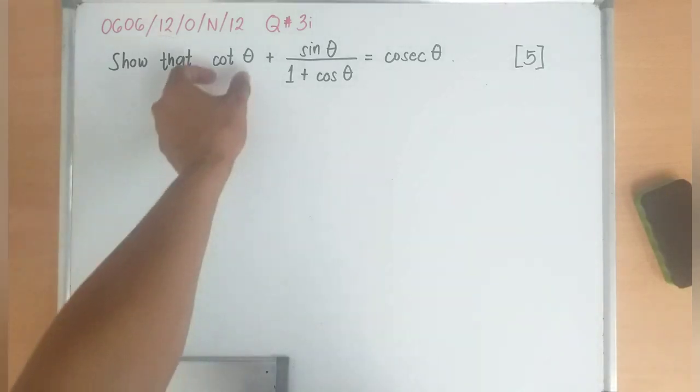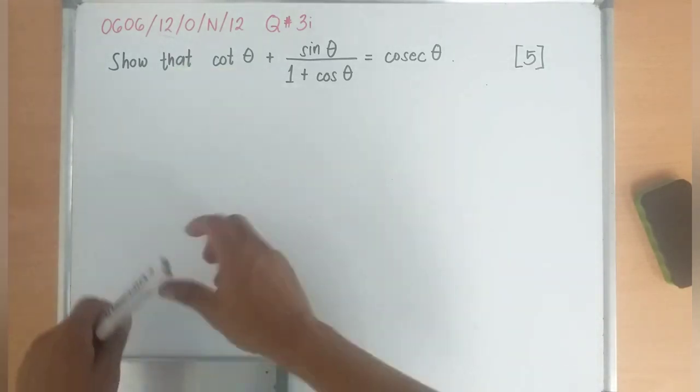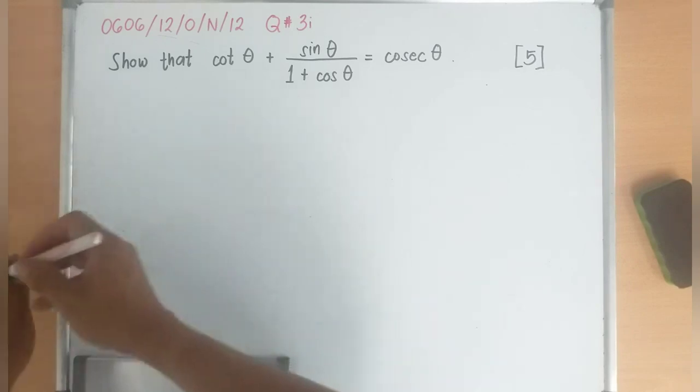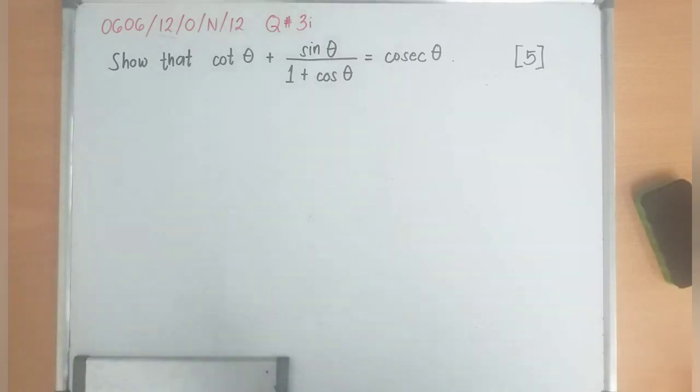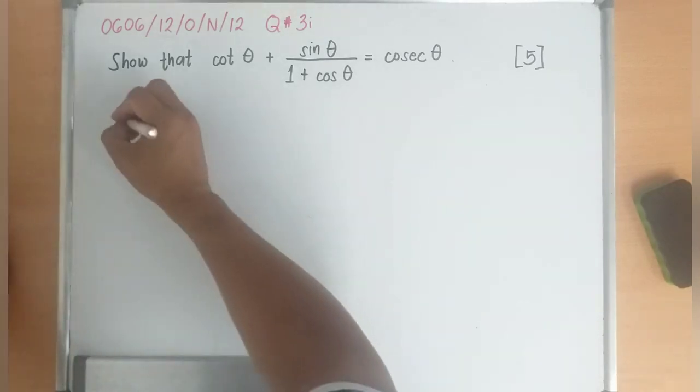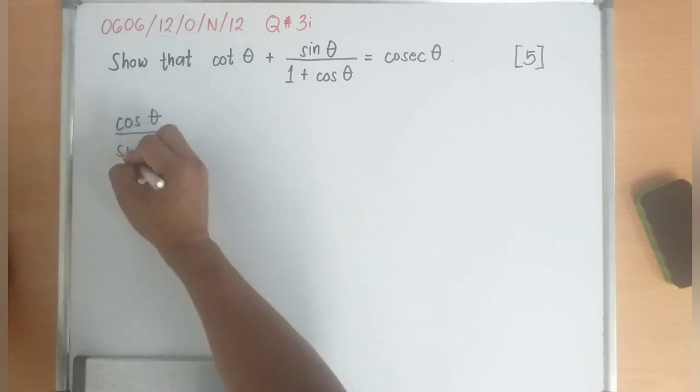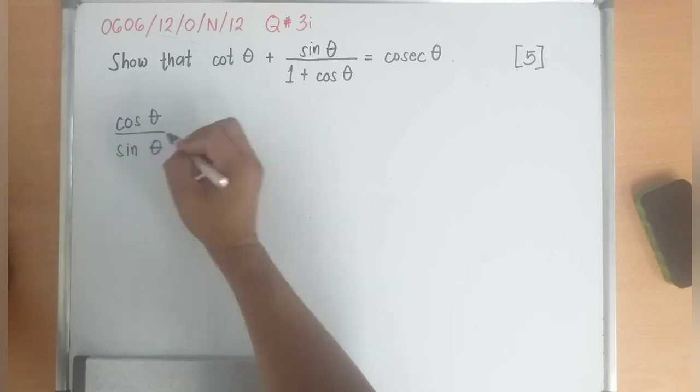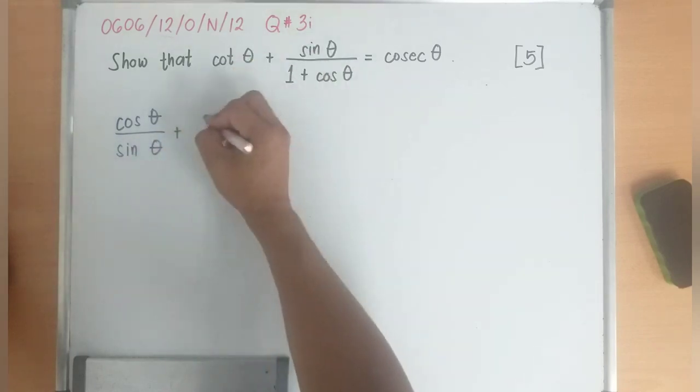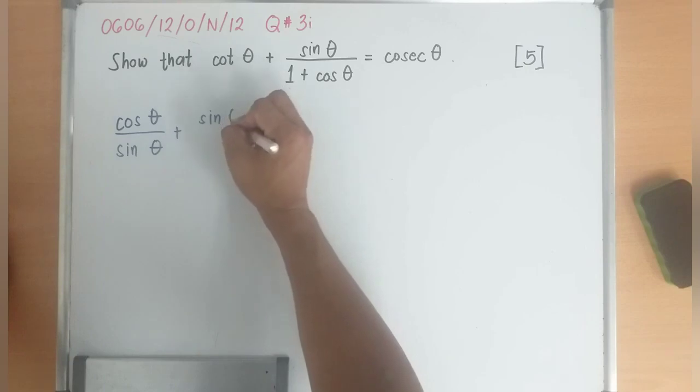Thus cotangent now is cosine over sine. So let's replace cotangent to cosine over sine theta. Then write everything, 1 plus cosine theta.